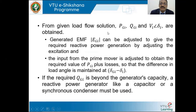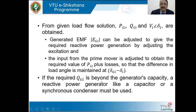From a given load flow solution, PGi, QGi, and Vi at angle delta_i are obtained. The generated EMF EGi can then be adjusted to give the required reactive power generation by controlling the excitation. The prime mover input is adjusted to obtain the required PGi plus losses, maintaining the load angle delta_Gi minus delta_i. If the required QGi is beyond the generator's capacity, an additional reactive power source such as a capacitor or synchronous condenser must be connected to the ith bus.